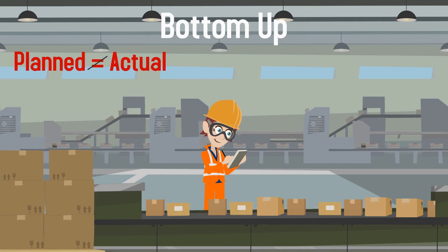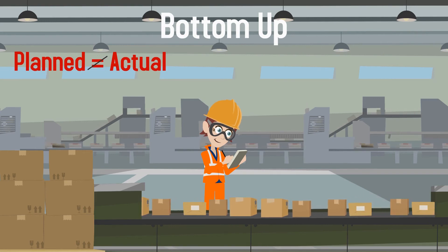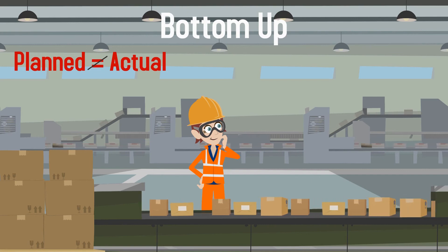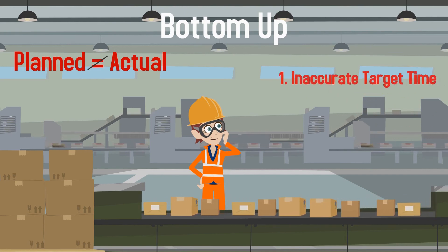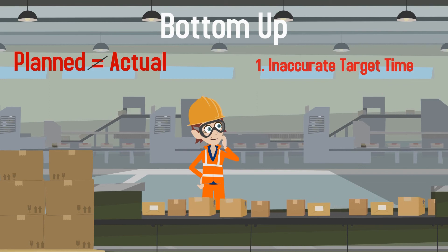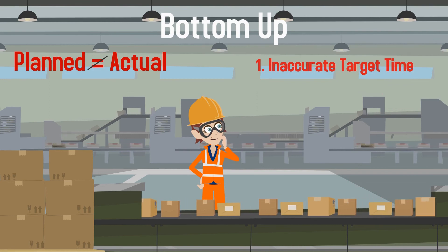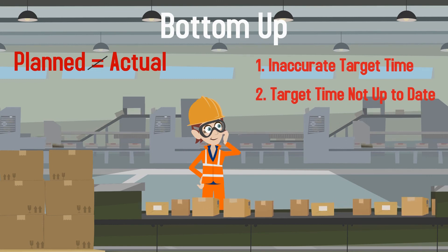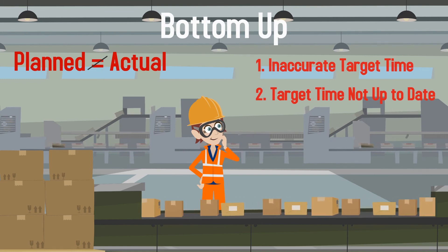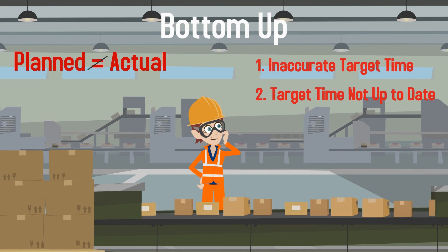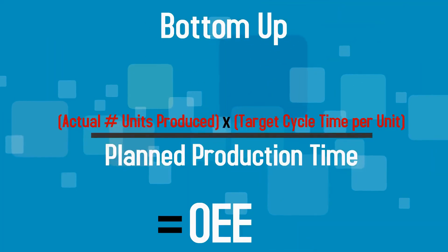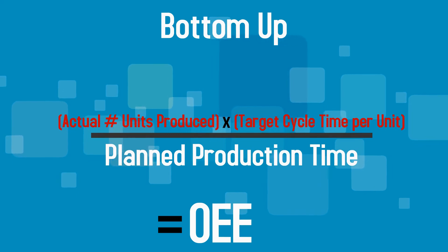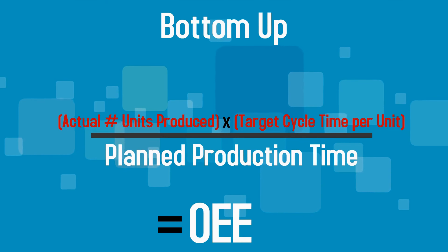When calculating OEE with the bottom-up method, there are two possible sources that could cause your planned and net production time to not be equal: either the target cycle time per unit used in the net production time formula was calculated incorrectly, or the product line was changed without updating the target cycle time, resulting in an inaccurate OEE. Calculating OEE using the bottom-up method will not only help measure productivity, but will also indicate how accurate your planned target times are.